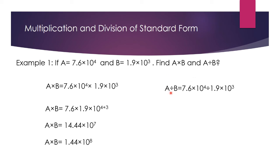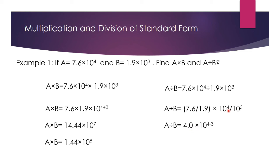Now we will solve for division. a divided by b will be equal to 7.6 multiplied by 10 to the power 4, divided by 1.9 multiplied by 10 to the power 3. We write it as a fraction: 7.6 over 1.9, multiplied by 10 to the power 4 over 10 to the power 3. Since both have one decimal place, we cancel to get 76 over 19. Dividing 76 by 19 gives 4.0. Applying the indices rule, since the base is the same (base 10), we subtract: 4 minus 3 equals 1. So the final answer is 4.0 multiplied by 10 to the power 1.